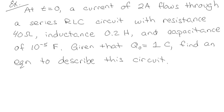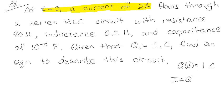Let's figure out our actual initial value problem. We're given that Q(0) = 1 coulomb. We're also given that the initial current is 2 amps. Since current equals the rate of change of charge, that means dQ/dt at t=0 equals 2 amps.